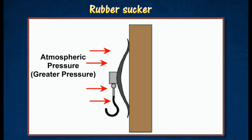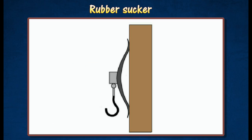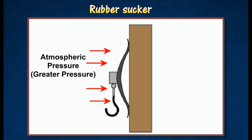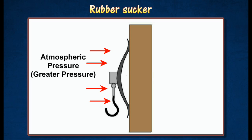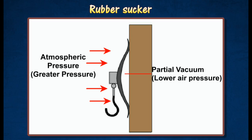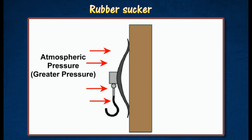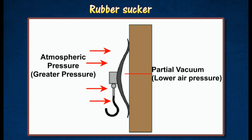It is pressed against the wall to create a partial vacuum by driving the air out. The higher external atmospheric pressure outside presses down on the sucker and makes it stick firmly to the wall.